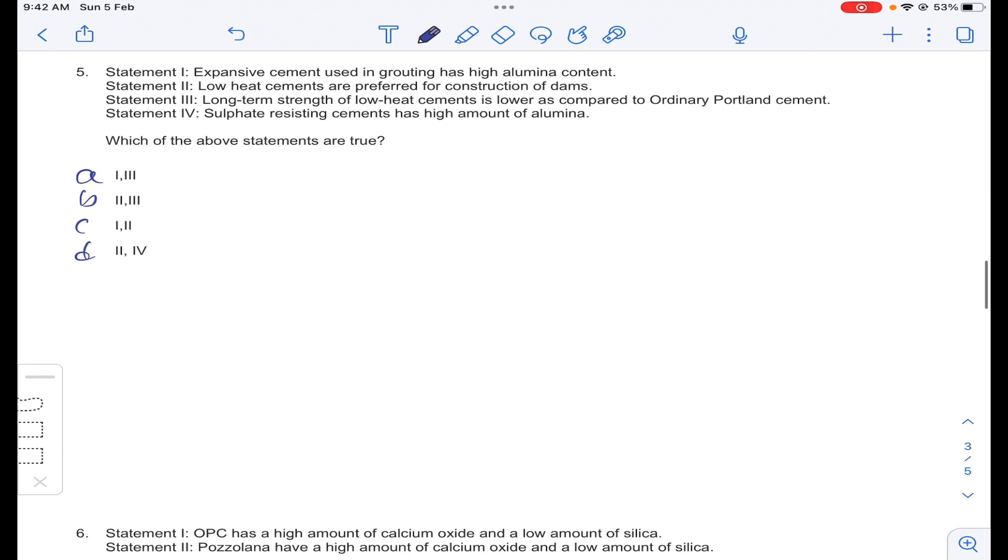Coming to question number 5, expansive cement is used in grouting works and it is having high alumina content. Expansive cement is used for grouting because high alumina content. Statement 1 is correct. Coming to statement 2.